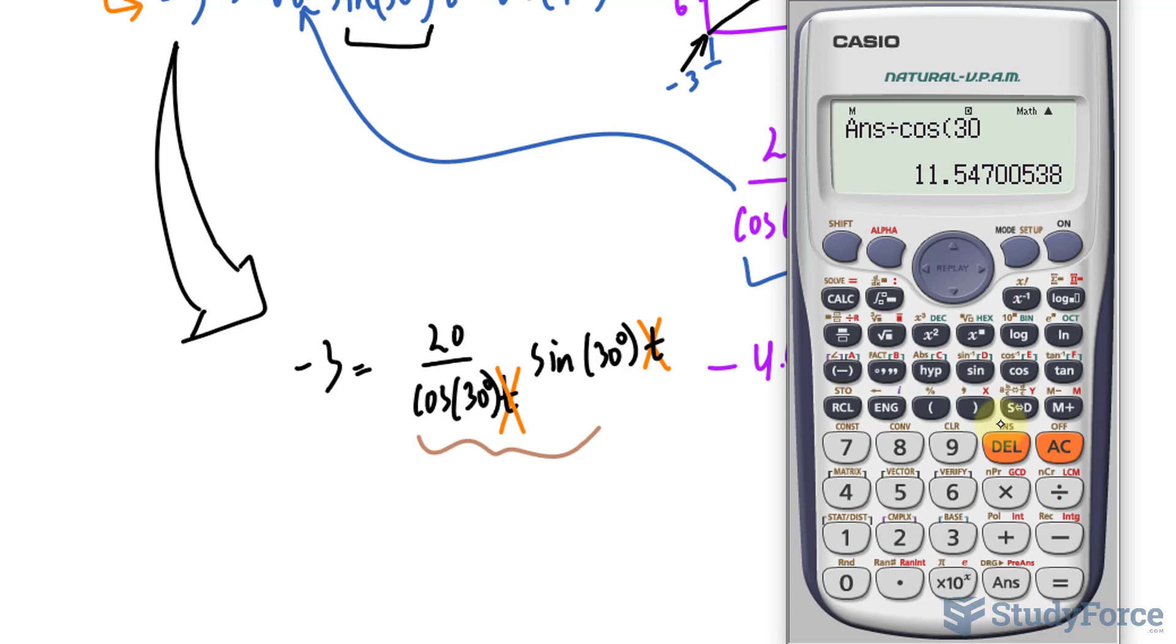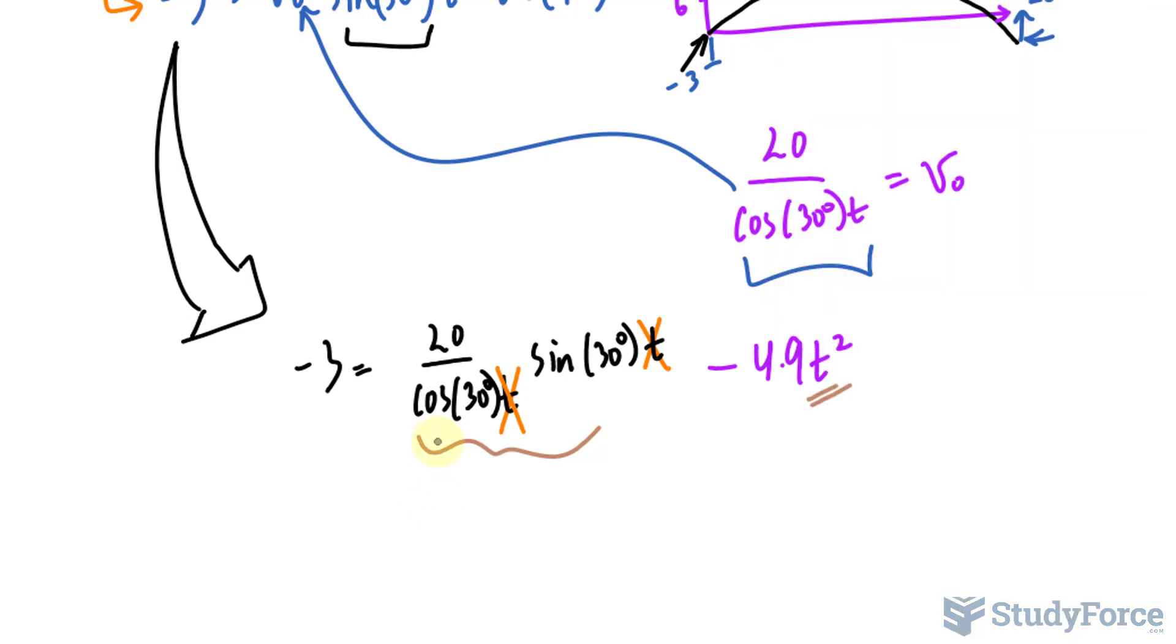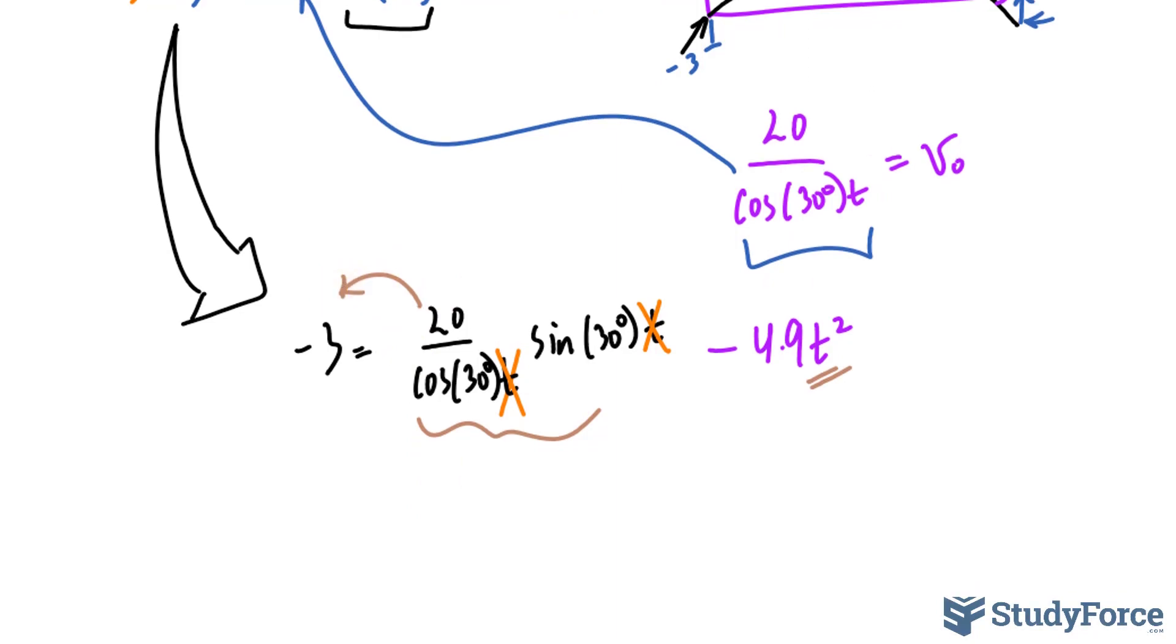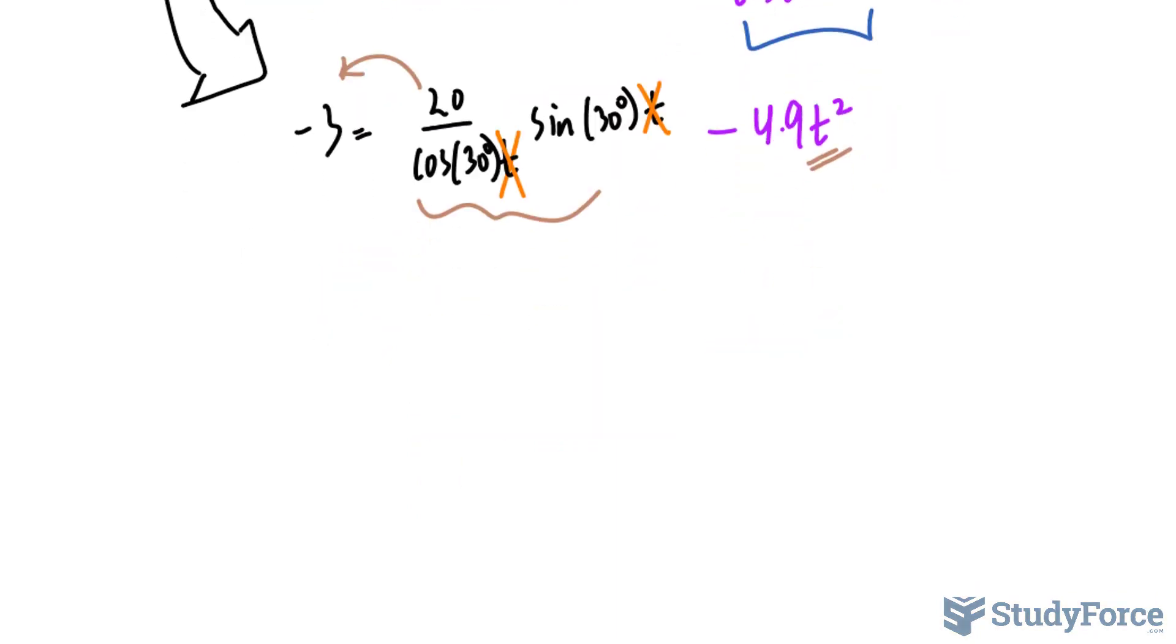You can write that in if you like. But I'll just keep it this way for now and move this expression. So 11.547, move it to this side. If you move something over, it becomes negative. So we have negative 3 minus this value of 11.547 is equal to negative 4.9 t squared.